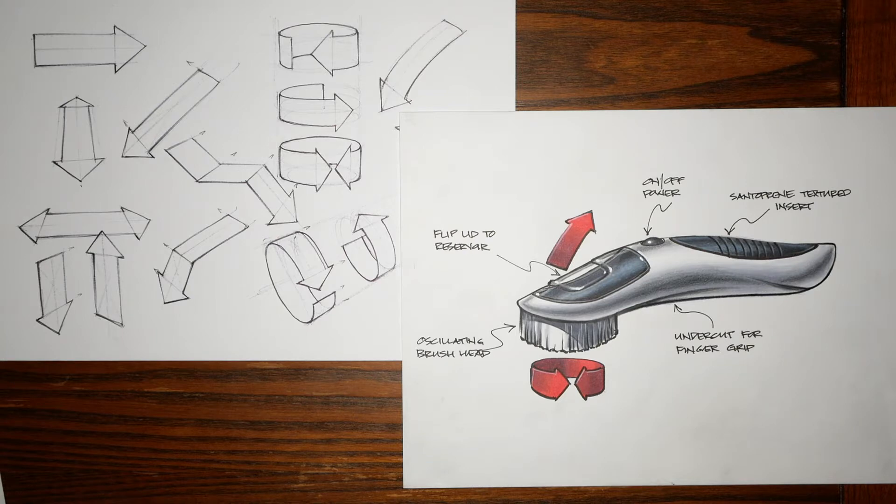As you can see from the sketch here I've included two action arrows, one for the flip top for the detergent reservoir and also the oscillating arrow to show that the brush rotates in multiple directions. Let's have a look at constructing these action arrows in perspective and then I'll talk a little bit about the requirements of this last stage for the weekly exercises.